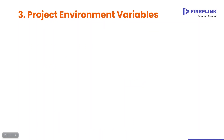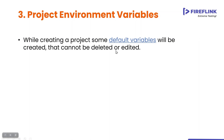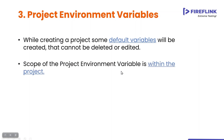Coming to project environment variable — whenever you create a project, there will be some default variables created automatically inside the project that you cannot delete or edit. Those variables are called project environment variables. The scope is also within the project. Once the project is created, some variables are created along with it — those default variables are called project environment variables, and you can use them in the entire project.